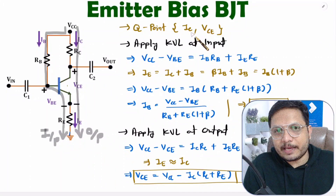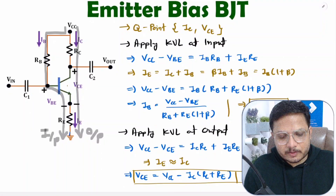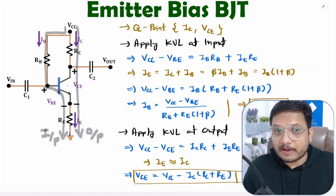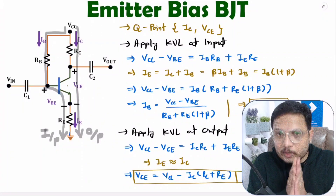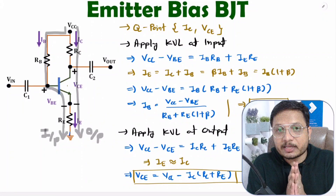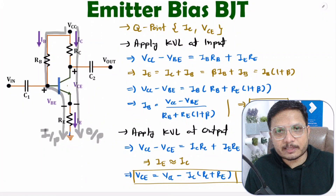By adding additional resistor RE, we are improving the stability of IC and VCE — the operating point becomes stable. I hope you have understood all these things. If you have anything to share, please note it in the comment section. Thank you so much for watching this video.